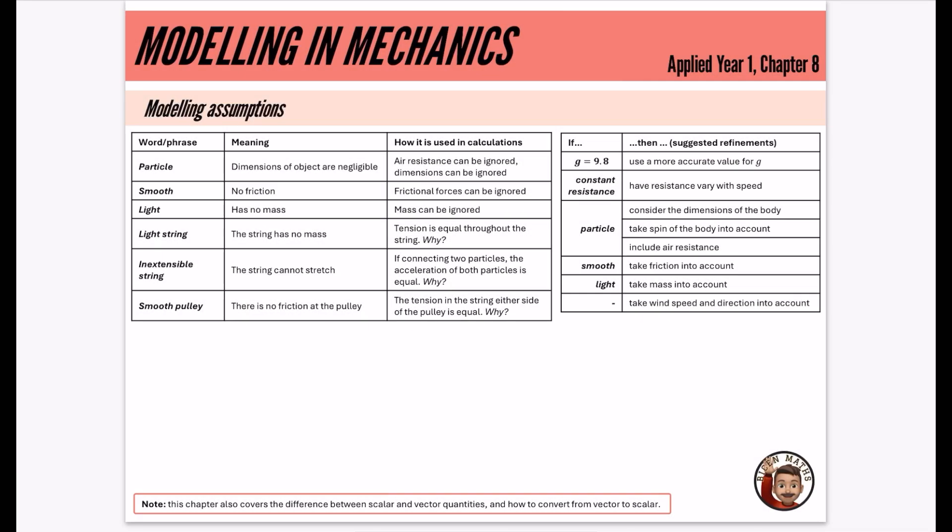Okay, so we're now on to the mechanics part of year one. This is applied year one, chapter eight. Obviously, it starts at chapter eight because of all of applied being put together. And this is a bit of a strange chapter. This is just called modeling in mechanics.